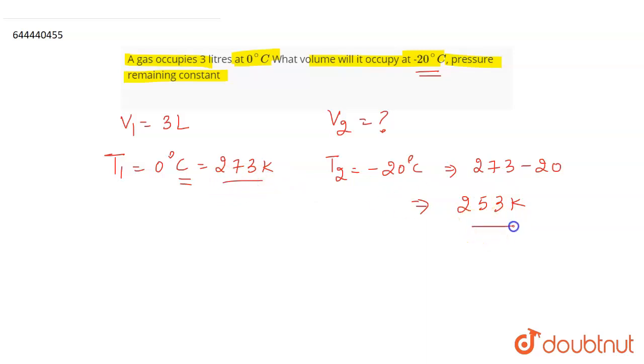So the answer will be 253 Kelvin. We have T1, we have T2, we have V1. We have to find out V2. And it is said that pressure is remaining constant. It means that we are talking about Charles's law here. And according to Charles's law, volume is directly related to temperature.